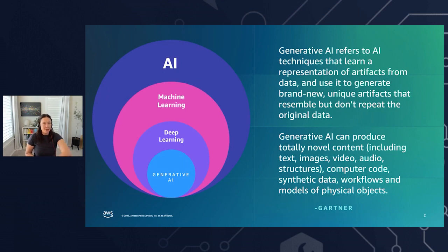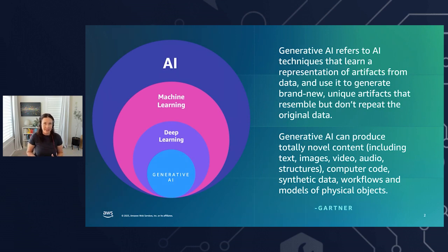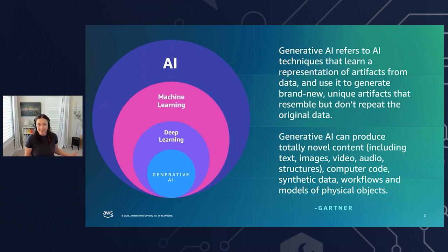What makes Generative AI different from the traditional deep learning we've been talking about for years is that it's making something new. If we picture a deep learning model that could classify art, no matter how well we train that model, it's never going to create new art. I couldn't tell it to make art that looks like my dog by Monet. Generative AI is making something new, not just doing classification or clustering.